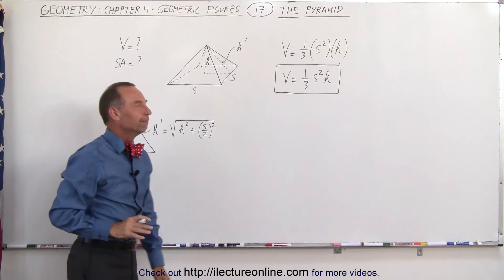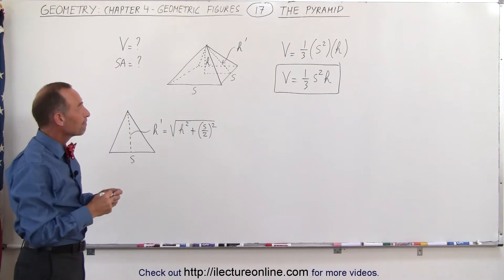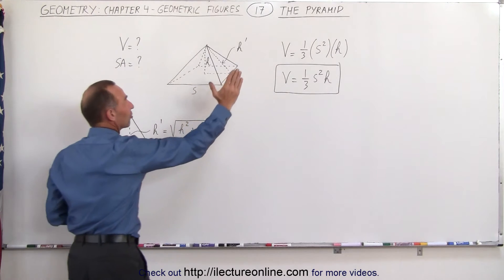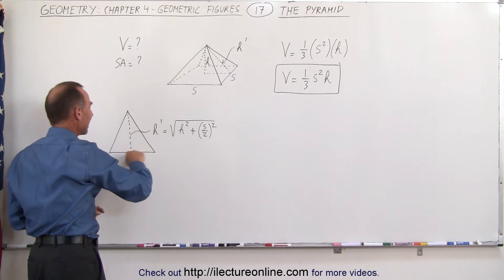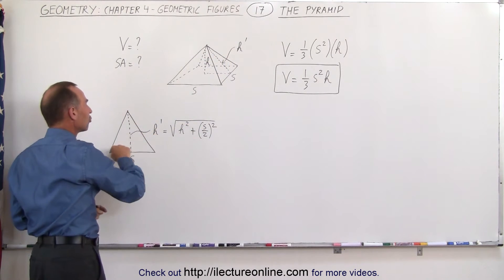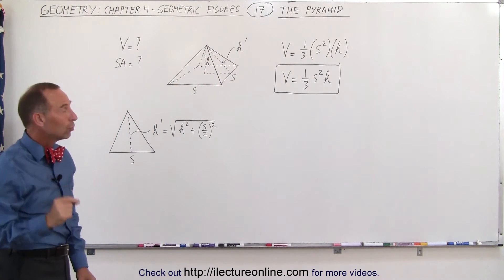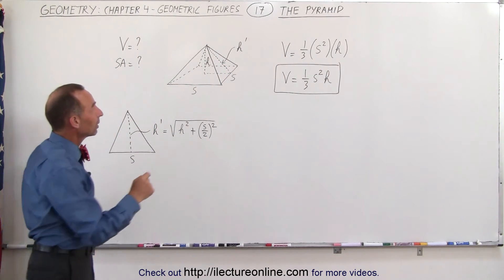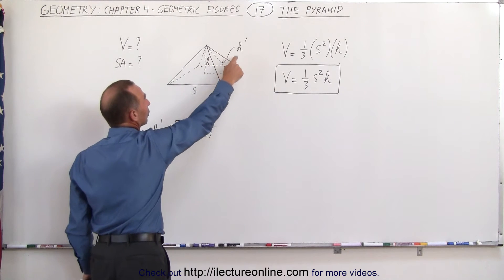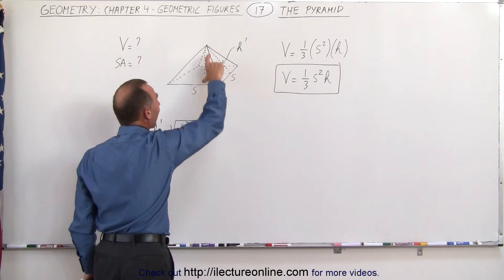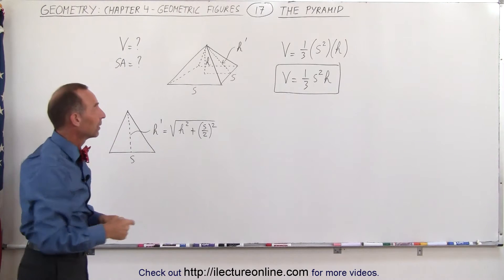But what about the surface area? That's a little bit more tricky because the sides are slanted. So what we need to do is find the area of the triangle made by each side. To do that, you have to realize that the height of each triangle — I call it h prime — is not the height of the actual pyramid. It's longer.